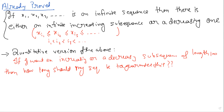Does everybody understand the question? How big should my sequence be? We had seen with smaller cases that 99² + 1 works. So we had seen that 99² + 1 is the answer for length 100. Now what will the statement be in general? Any sequence of length n² + 1 will have a monotonic subsequence of length n + 1.